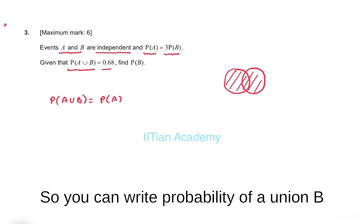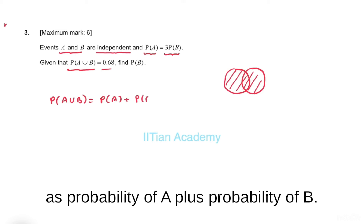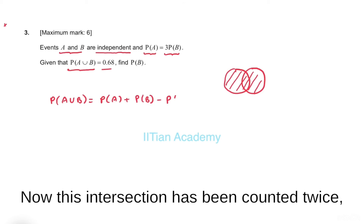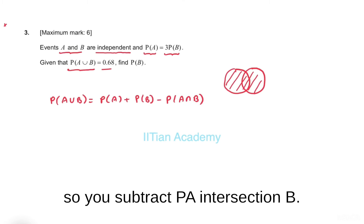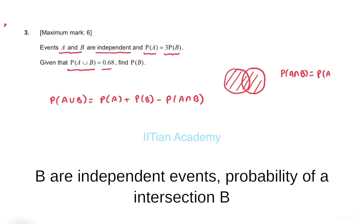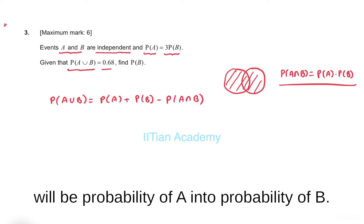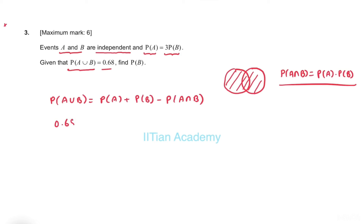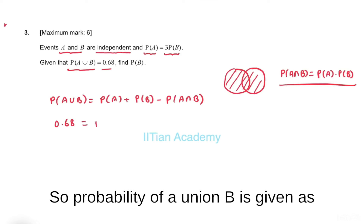You can write probability of A union B as probability of A plus probability of B. Since the intersection has been counted twice, you subtract P(A intersection B). Remember that since A and B are independent events, probability of A intersection B equals probability of A multiplied by probability of B.